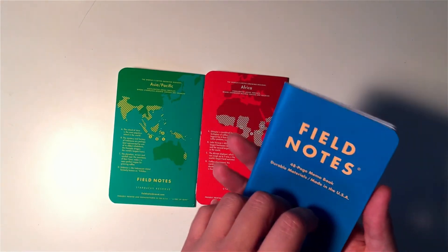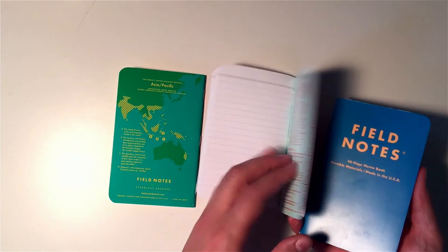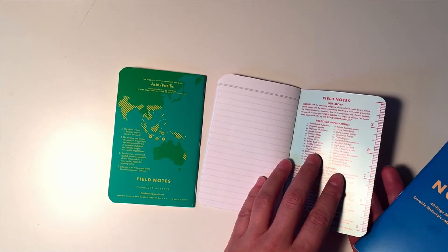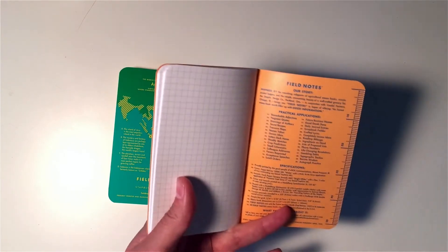So yeah, it looks like the inside colors are the inverse of the outside. So the one that's red and blue, it's blue and red inside here. I'm going to turn to the back real quick.